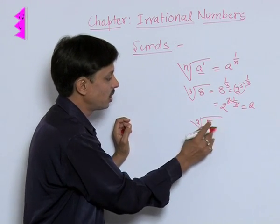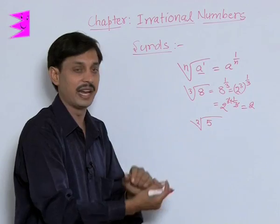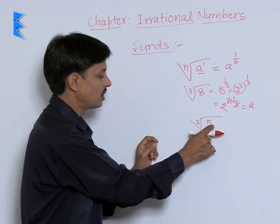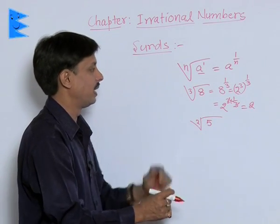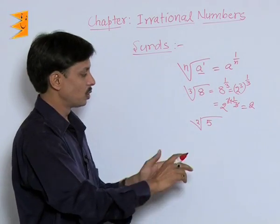And this is what? This is known as radicand. If this radicand is 5, here radicand is a.